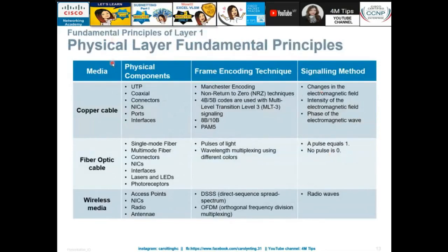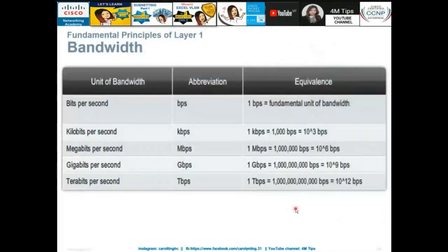The physical layer fundamentals for copper cable involve physical components such as UTP, coaxial cable, connectors, network interface cards, ports, and interfaces. Copper cable has different components, different encoding, and different signal types.